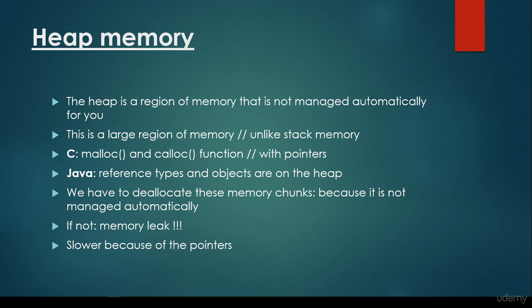If we do not get rid of these objects from the heap, this is what's called a memory leak. A memory leak is the situation when there are dead objects on the heap memory — we do not use these objects and classes, but we have forgotten to remove them from the heap. And because heap memory uses pointers, that's why it is slower than stack memory.